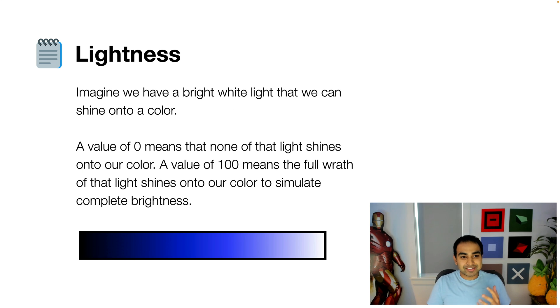The next value is lightness. And the way to think about it is imagine we have a bright white light in our hands that we can shine onto some object. If a value of zero means the light is completely off and there's complete darkness, we can't see anything, so the color is completely black. But a value of 100 for lightness means that our light bulb is shining so bright that we cannot see the color at all. It's basically pure white.